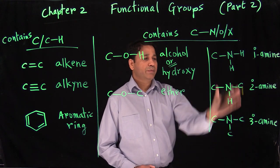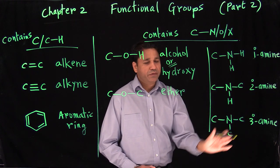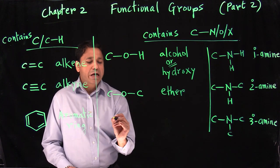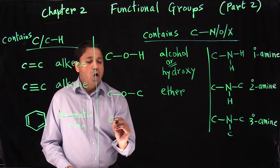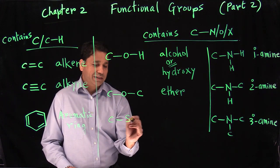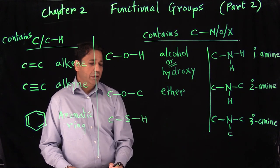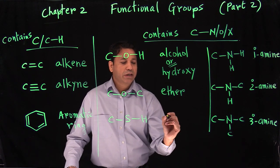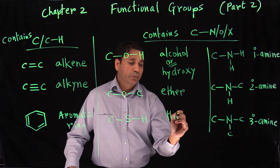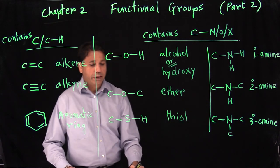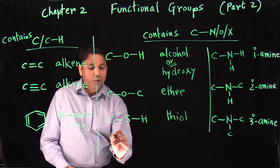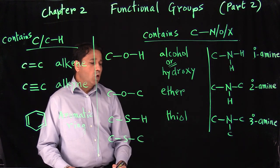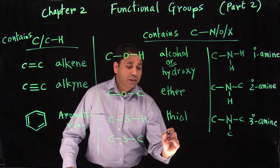Make sure you try to understand primary, secondary, and tertiary amines because they can be a little confusing. We can also have carbon bonded with sulfur. Sulfur's second bond is a hydrogen, and that is called a thiol group. When you replace that hydrogen with a carbon, it becomes a sulfide.